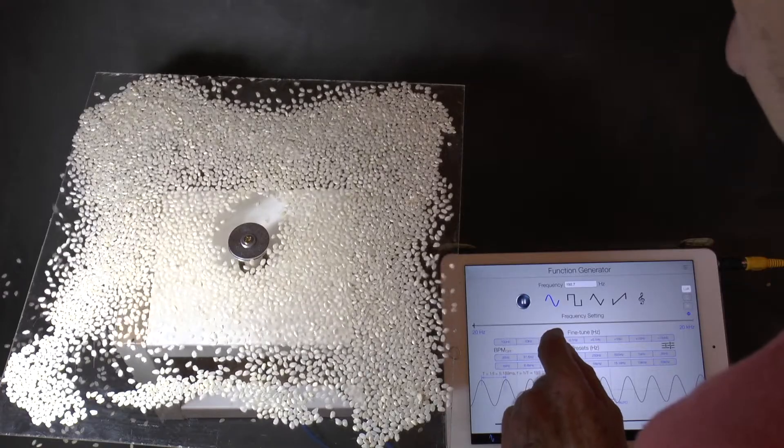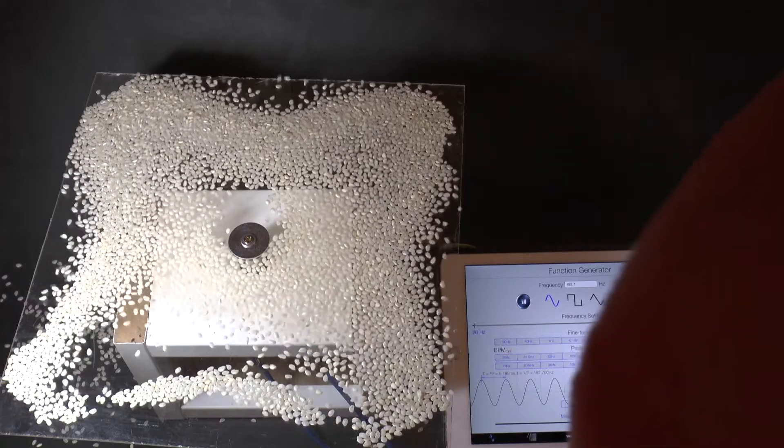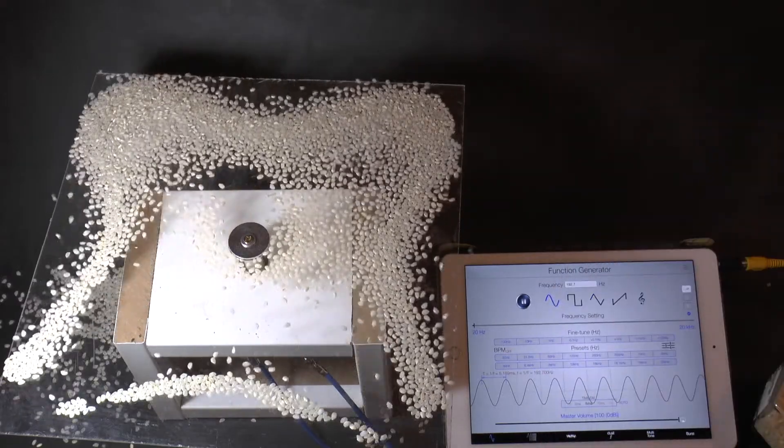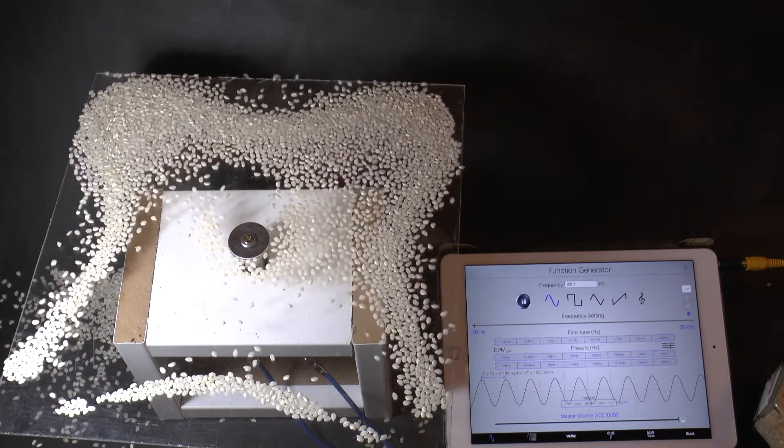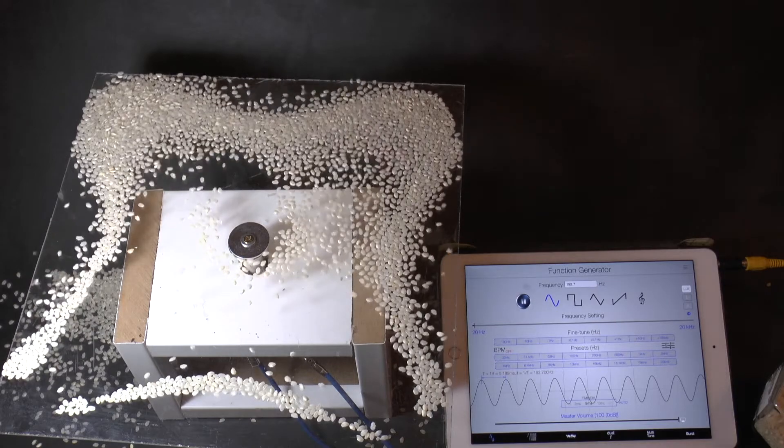The rice moves and moves away from the places where the plate is vibrating rapidly and moves towards the nodes where it's not vibrating at all. I haven't got the plate perfectly flat, but you can see a clear pattern emerging.